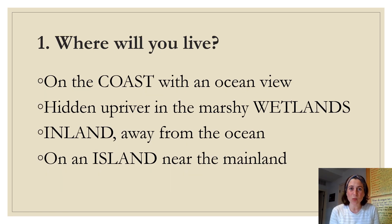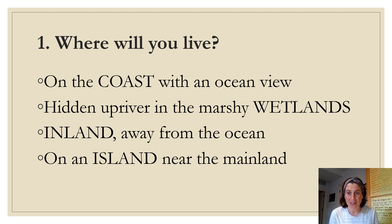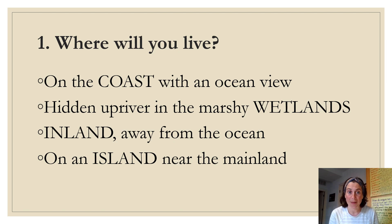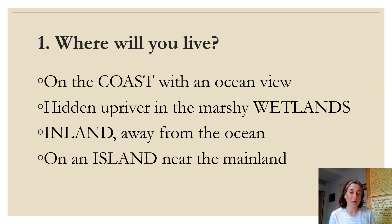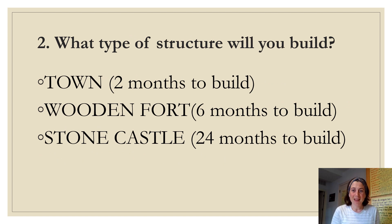Decision one: where will you live? You can choose to live on the coast with an ocean view — write 'coast' next to number one. You could choose to live hidden upriver in the marshy wetlands — write 'wetlands.' You can go inland, surrounded by land and away from the ocean — write 'inland.' Or you can live on an island near the mainland, surrounded by water — write 'island.' Go ahead and pause the video if you need a little more time to think about that.